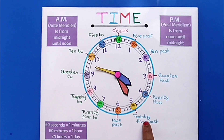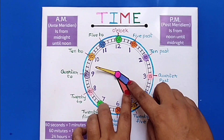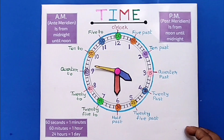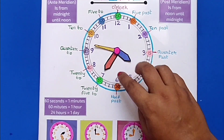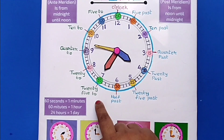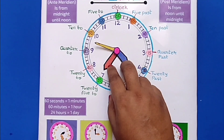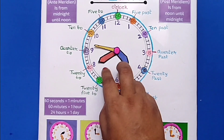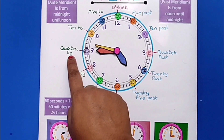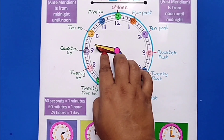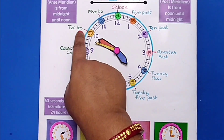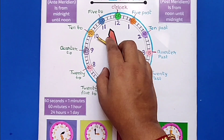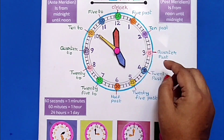It is 25 past 4, half past 4. After 6 it will change. Now it is 25 to 5, 20 to 5, quarter to 5, 10 to 5, 5 to 5, and finally it is 5 o'clock.